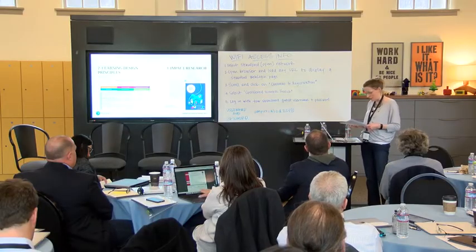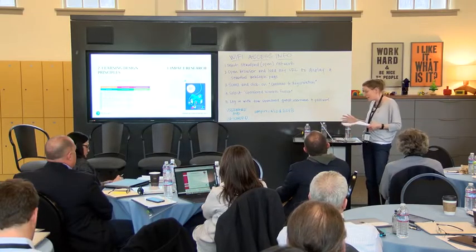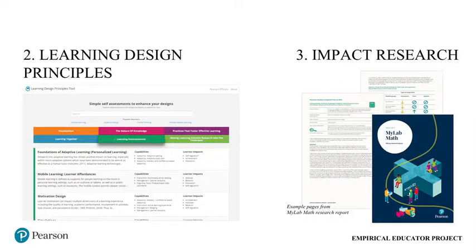And then the final area: impact research. We've heard quite a bit about it today. The third set of resources that we want to share are all to do with impact research. In 2018, we're going to be releasing our first set of peer-reviewed and publicly audited efficacy reports on the impact of a representative sample of our products on outcomes. That is one of the things that's keeping me up at night, just in case you're interested, but that's the end of March.